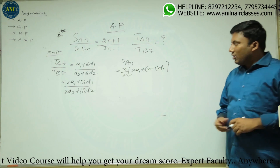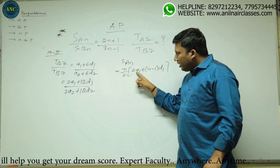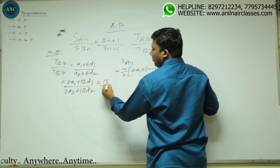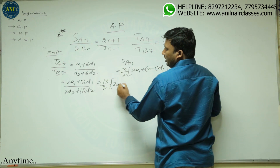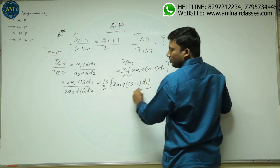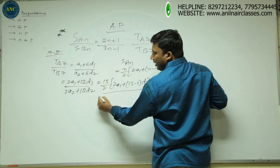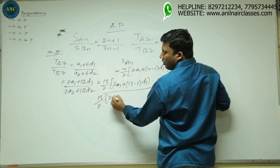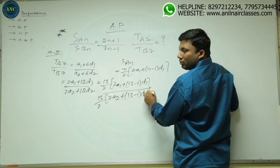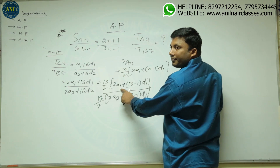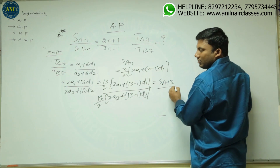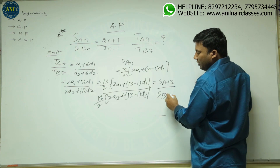Are you all with me? Now, if you observe closely — since both are 7th terms — I will write it as 13/2 into (2A1 plus 13 minus 1 into D1), divided by 13/2 into (2A2 plus 13 minus 1 into D2). What is this value? S_A13. And this value? S_B13.